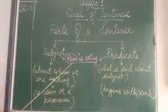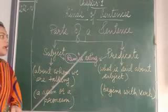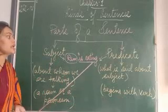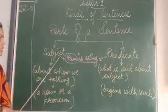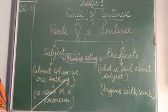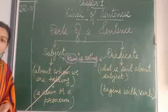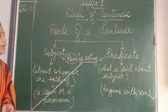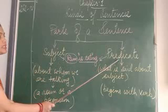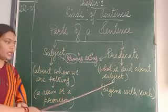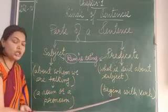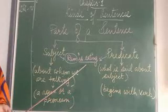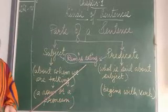So subject is the first part of the sentence and predicate is the second part of the sentence. A subject is about whom they are talking and it is a noun or it can be a pronoun. Predicate is what is said about the subject and it begins with a verb.